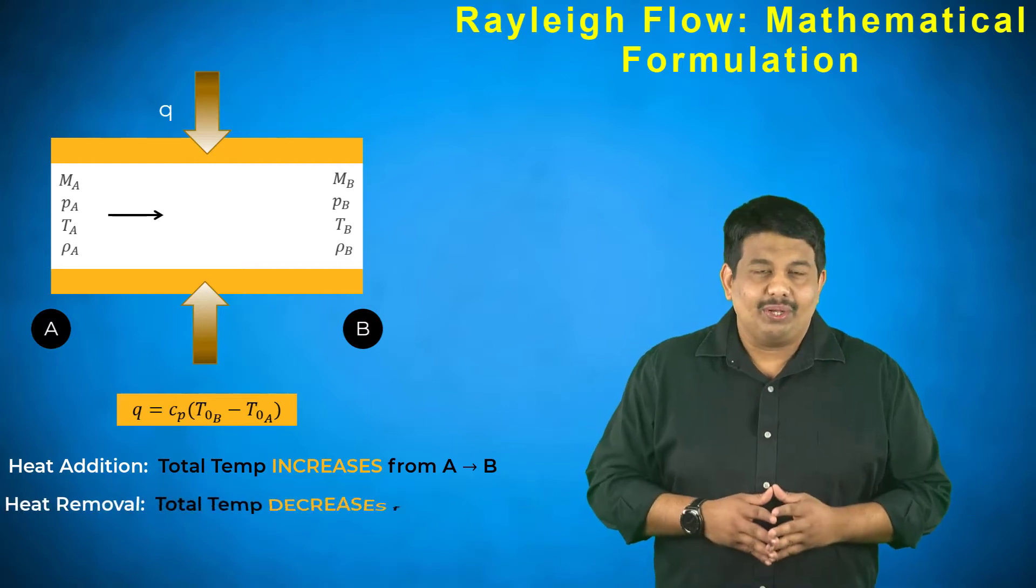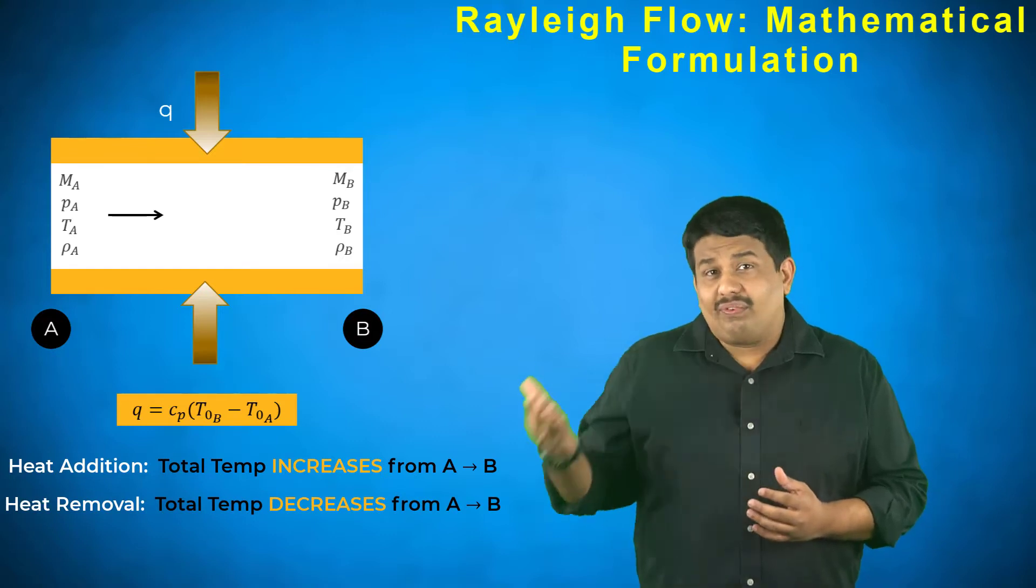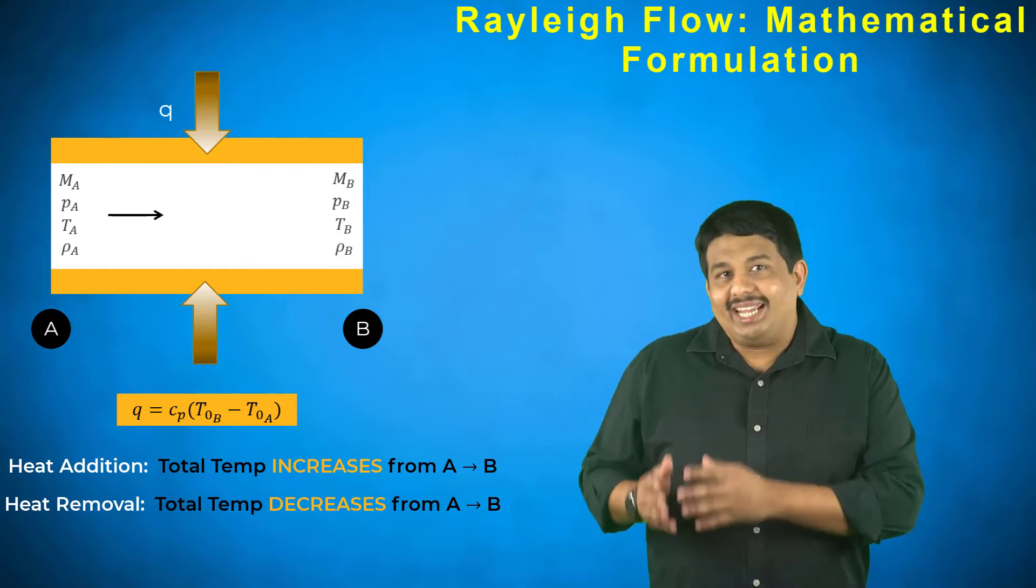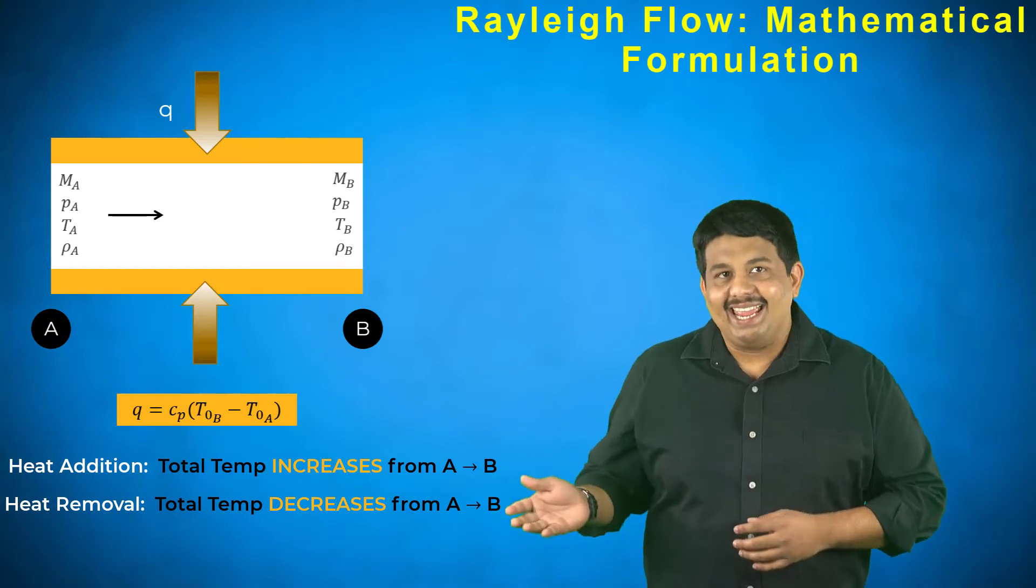On a similar note, if Q were removed from the gas, the total temperature T0 would decrease between regions A and B.